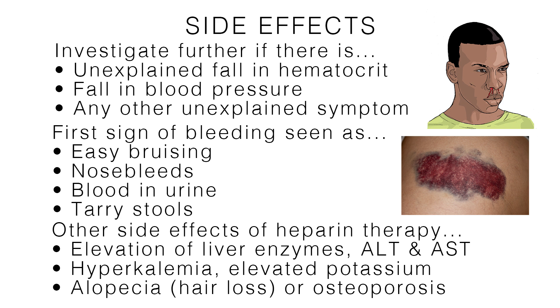The most common adverse effect of heparin is bleeding. Hemorrhage can occur at virtually any site in the patient receiving heparin therapy. Therefore, an unexplained fall in hematocrit, fall in blood pressure, or any other unexplained symptoms should lead to further investigation of possible bleeding. The first signs of bleeding are usually easy bruising, nosebleeds, blood in the urine, or tarry stools. There is also a decrease in blood platelets.